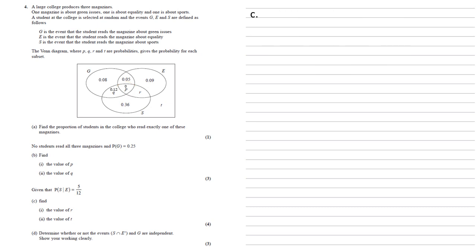For part C, given that the probability of S given E equals 5/12, we need to find the values of R and T. So let's start with R. We know the formula that the probability S given E is equal to the probability of the intersect of S and E all over the probability of E.